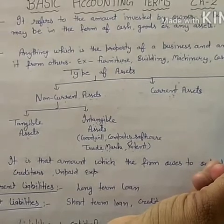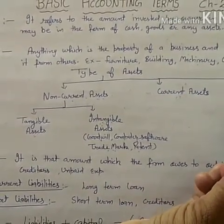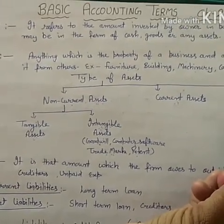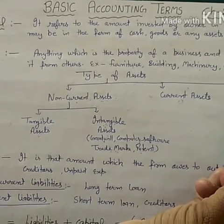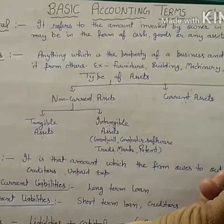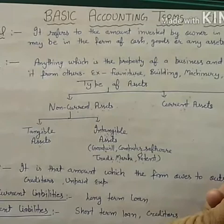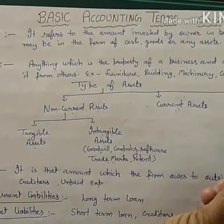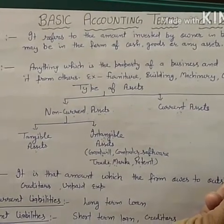Fictitious Assets are those which have no real value. For example, if a firm has losses from a previous year which have not been distributed to the owner, these are known as Fictitious Assets. We show these losses in the accounts of the business as assets because they have to be distributed in future years.